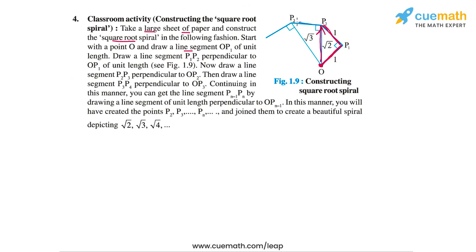Next draw a line segment P2 to P3 of length 1 unit. Again using the Pythagoras theorem we can see that OP3 has a length of root 3 units.